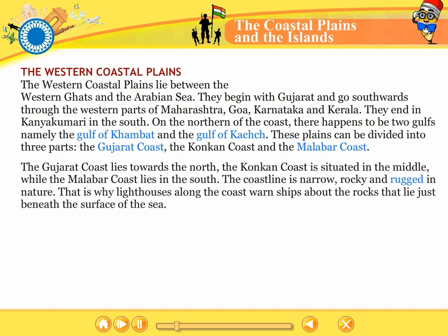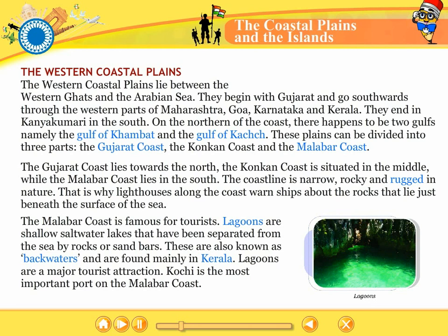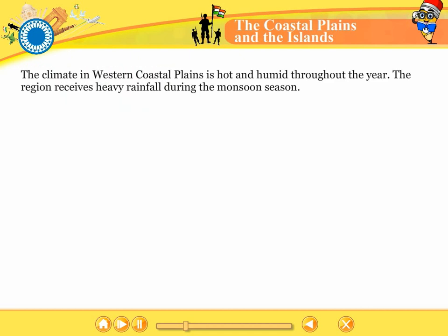The Gujarat coast lies towards the north. The Konkan coast is situated in the middle while the Malabar coast lies in the south. The coastline is narrow, rocky and rugged in nature. That is why lighthouses along the coast warn ships about the rocks that lie just beneath the surface of the sea. The Malabar coast is famous for tourists. Lagoons are shallow saltwater lakes that have been separated from the sea by rocks or sand bars. These are also known as backwaters and are found mainly in Kerala. Lagoons are a major tourist attraction. The climate in western coastal plains is hot and humid throughout the year. The region receives heavy rainfall during the monsoon season.